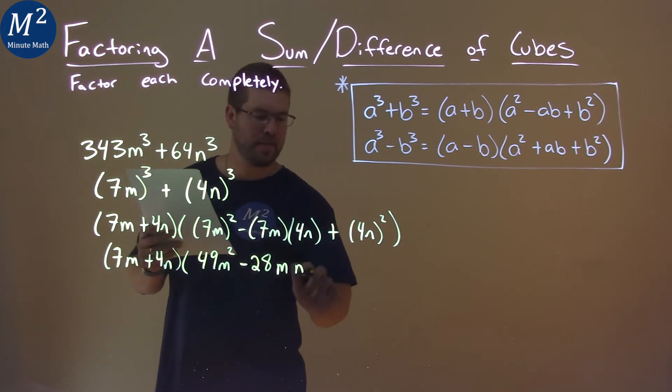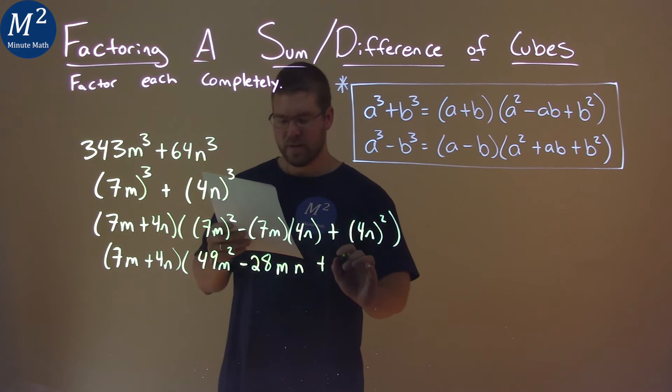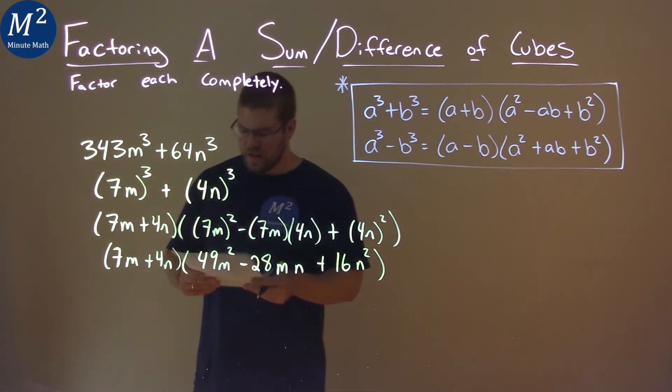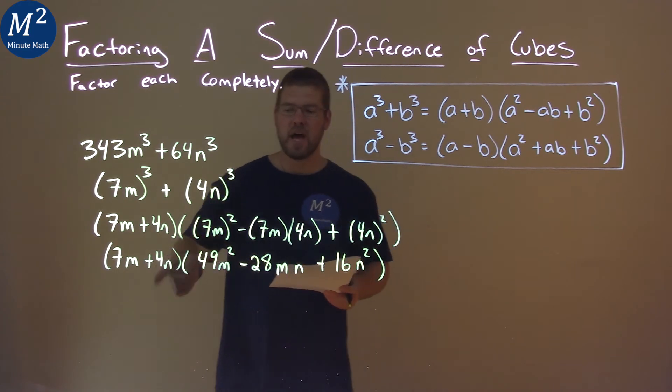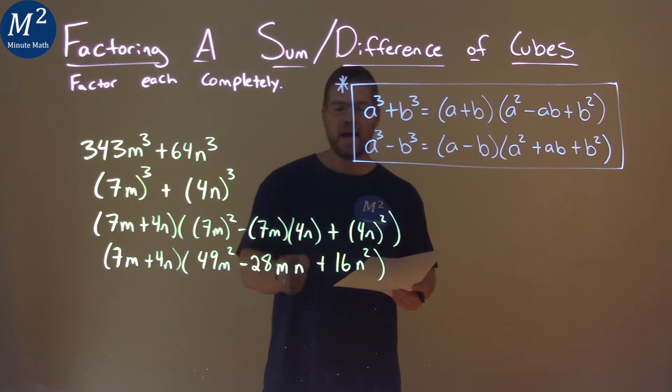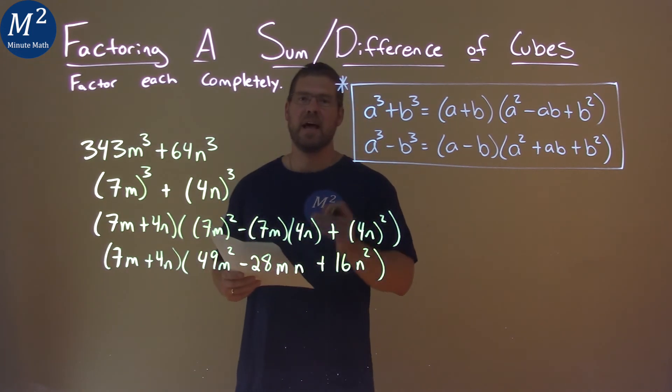So 28mn plus 4 squared is 16 and n squared is n squared. And so our final answer here is 7m plus 4n times 49m squared minus 28mn plus 16n squared.